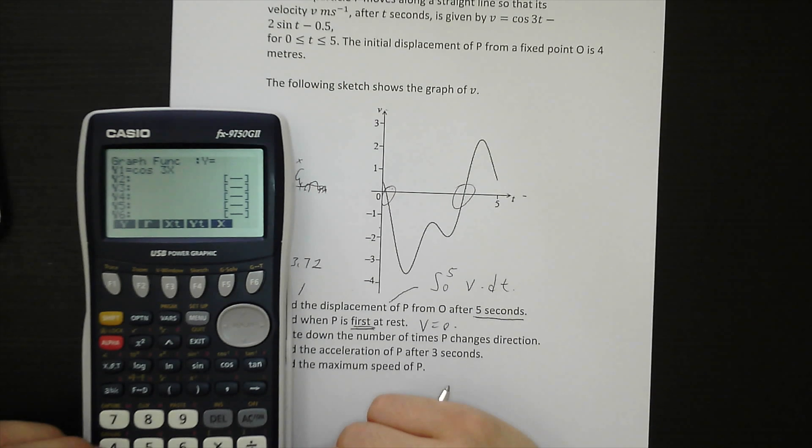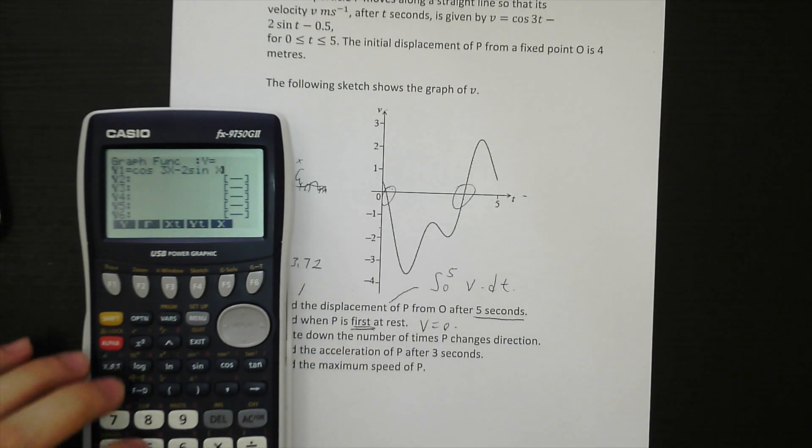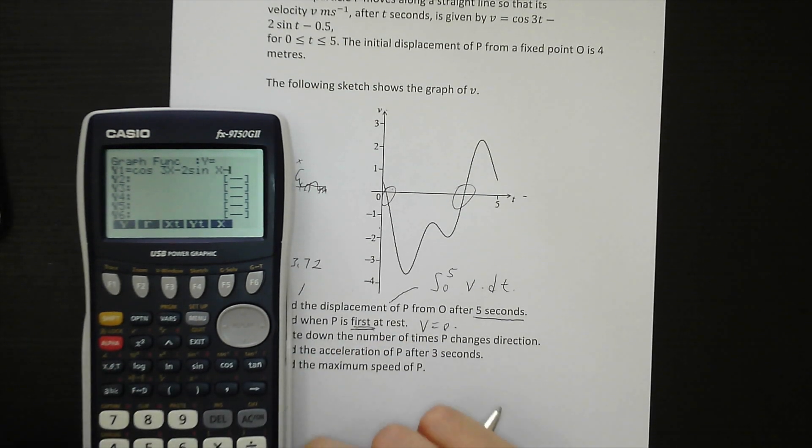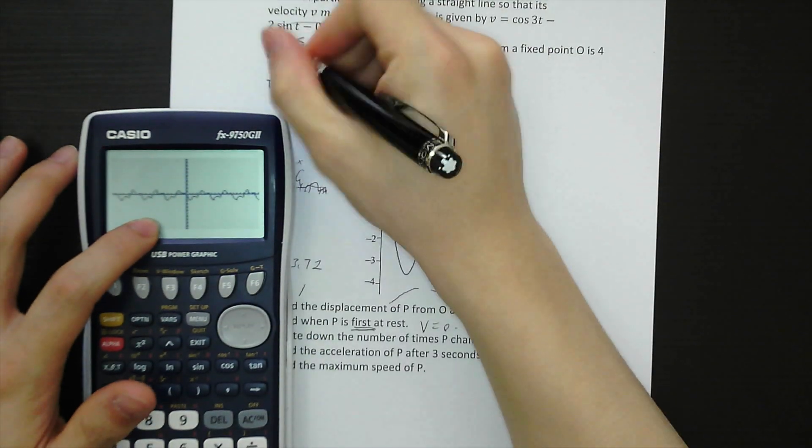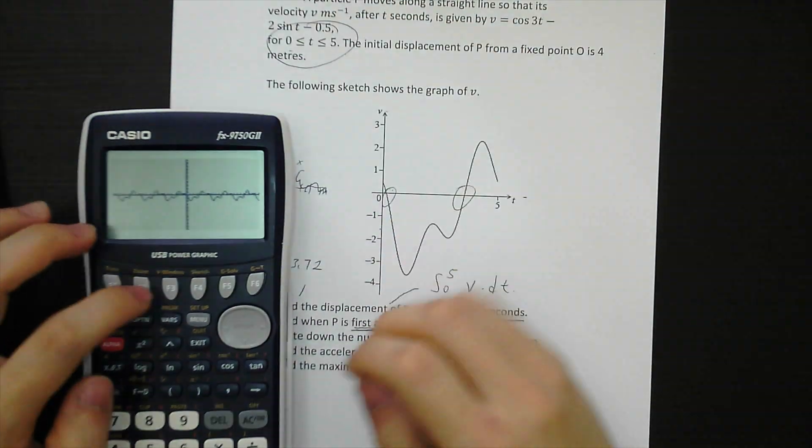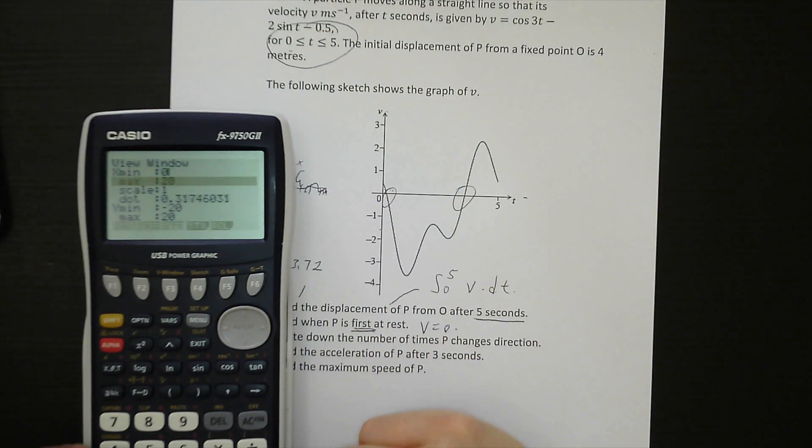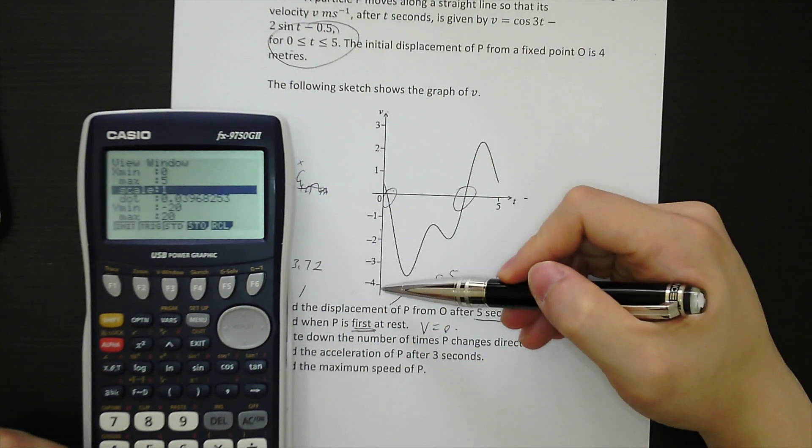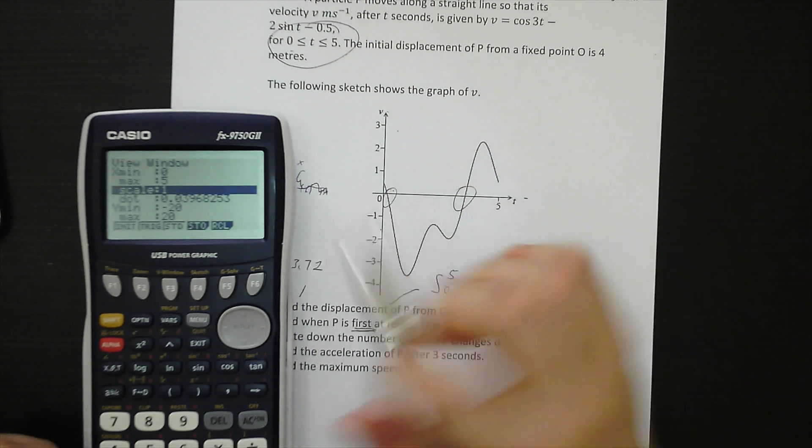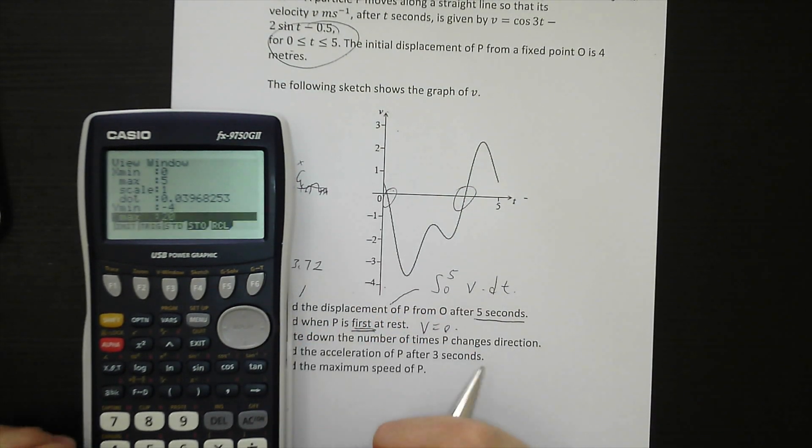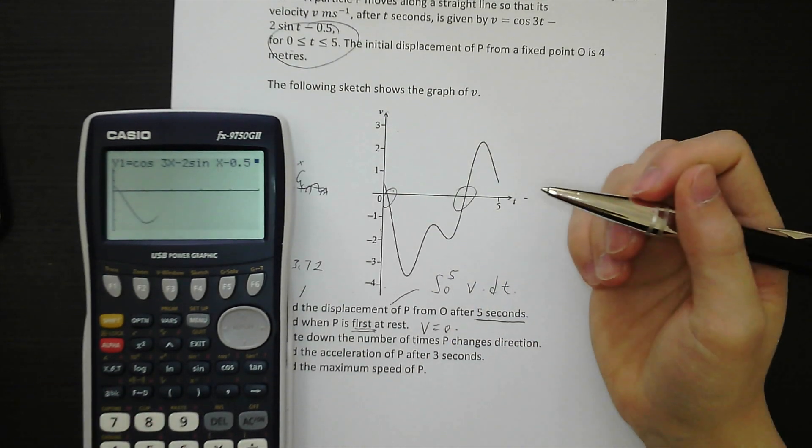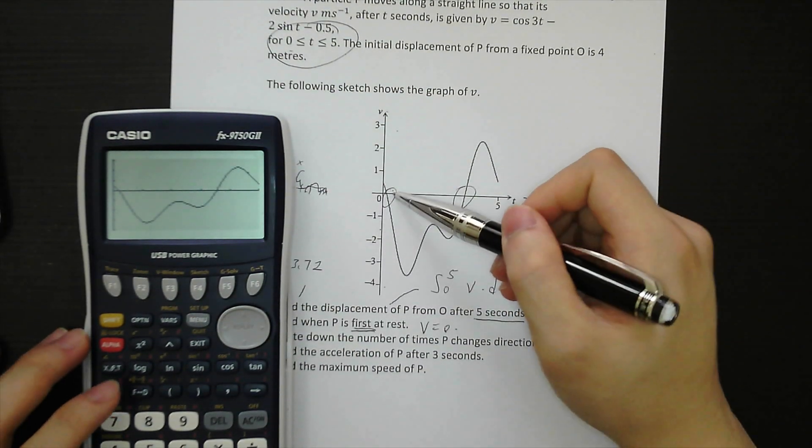Use GDC and then plot the graph. Cos 3x minus 2 sine x minus 0.5. And then you graph it. And then you see the graph here. The domain is 0 to 5, so the window from 0 to 5. The y would be from negative 4 to 3. And you see the same graph here.